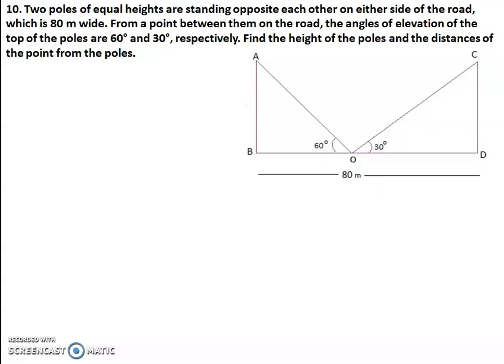We need to find AB and CD and the distance of the point from the poles, that is BO and DO. You can see two angles: 60 degrees and 30 degrees. So we will be using trigonometric ratios with the specified values of 60 degrees and 30 degrees. Let us see what the method is.